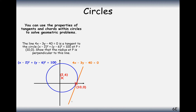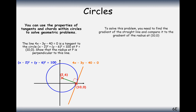The radius and the tangent form a right angle. The easiest way to prove that two lines are perpendicular, given their coordinates and equations, is to prove that their gradients multiply to make minus 1. So what we need to do first is find the gradients of the orange line and the green line.